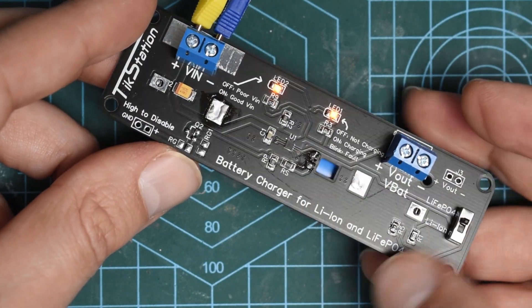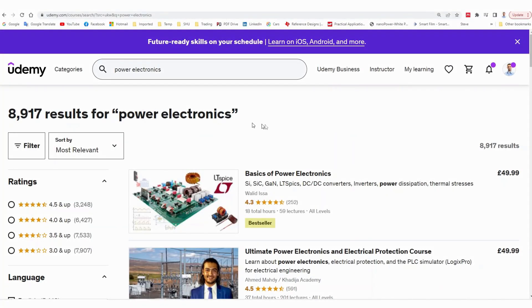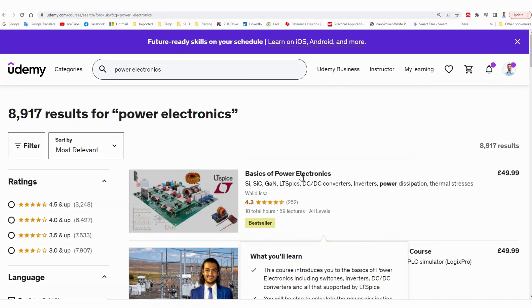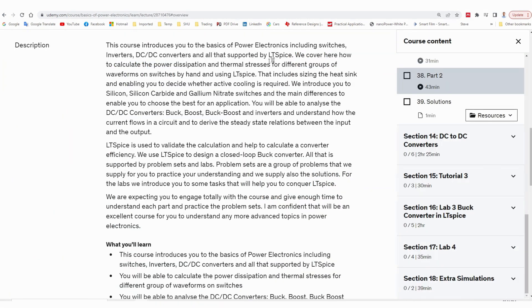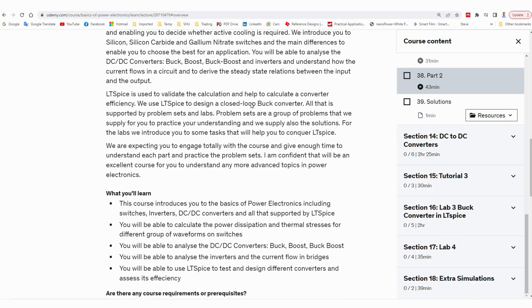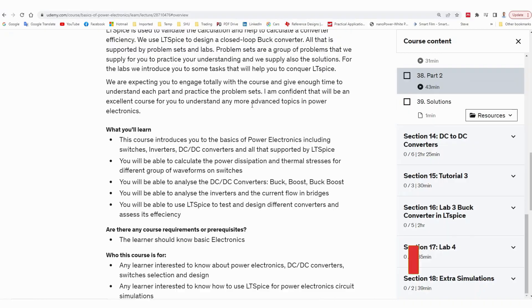If you like to know more about power electronics and circuits, please consider looking at my course on Udemy which is basics of power electronics. It teaches you how to use Altispice and simulate different DC to DC converters and consider also the thermal dissipation and design of different converters. And also it introduces you to silicon, silicon carbide and gallium nitride switches. And if you like to know more, please consider looking at the links in the description below.